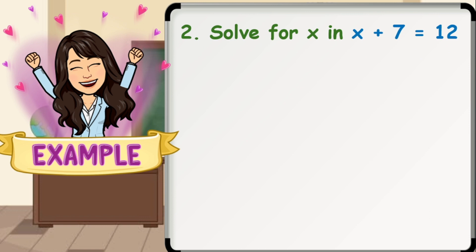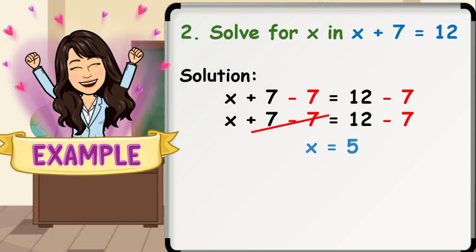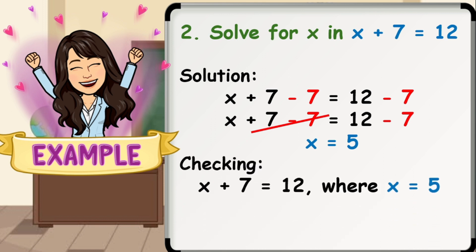Number 2: solve for x in x plus 7 equals 12. First, isolate the variable x by using SPE, the Subtraction Property of Equality — subtract 7 on both sides of the equation. Note to use SPE if the sign after the variable is a plus sign. So we have x plus 7 minus 7 equals 12 minus 7, which gives us x equals 5. Checking: substituting 5 in place of x gives us 5 plus 7 equals 12, that is 12 equals 12. Our solution is correct.